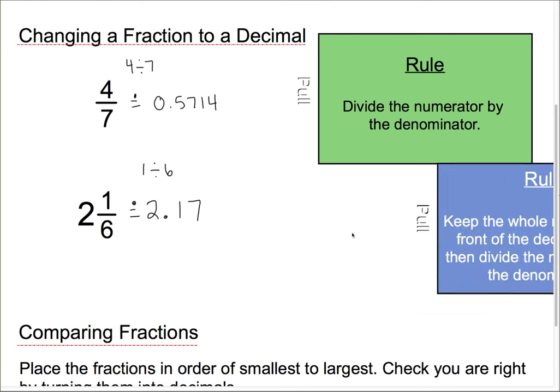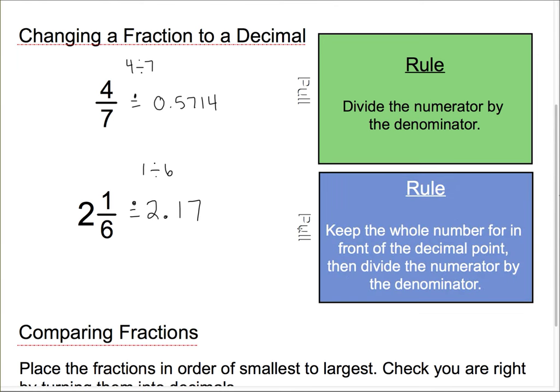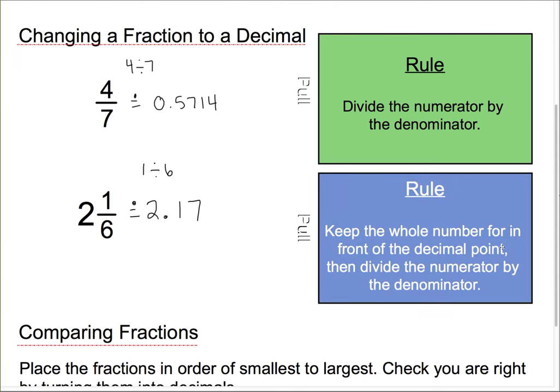And now, we'll pull out this tab, and so the rule, if it's a mixed number, keep the whole number in front of the decimal point, then divide the numerator by the denominator.